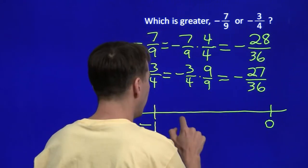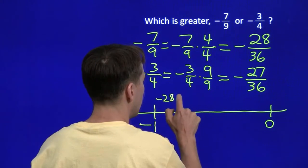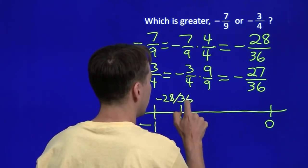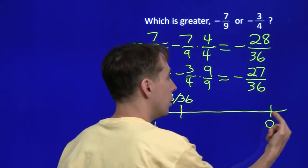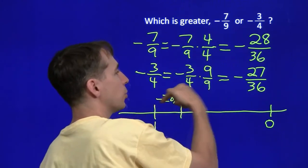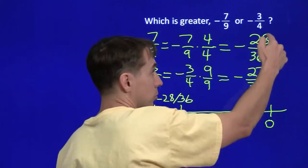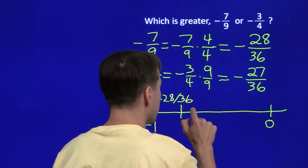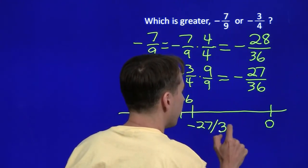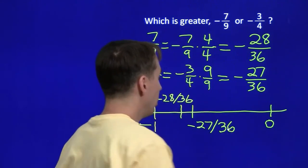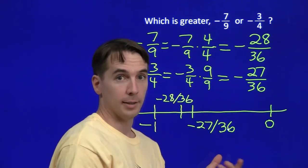So we'll put the first fraction, negative 28 over 36, say that's right here. Now, where's negative 27 over 36? Because 28 is larger than 27, 28 over 36, we have to go farther this way than we will when we go find 27 over 36 by going this way. It's just 28 is larger than 27, so 28 over 36 is farther this way. So 27 over 36 won't be quite as far away from 0, which means negative 27 over 36 will end up to the right of negative 28 over 36 on the number line.